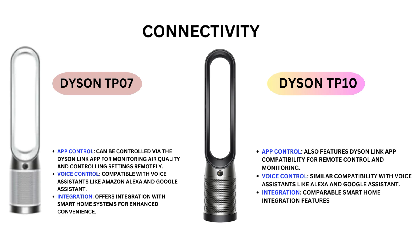Integrations: the TP-07 offers integration with smart home systems for enhanced convenience. Dyson TP-10 app control also features Dyson Link app compatibility for remote control and monitoring. Voice control: similar compatibility with voice assistants like Alexa and Google Assistant, and comparable smart home integration features.